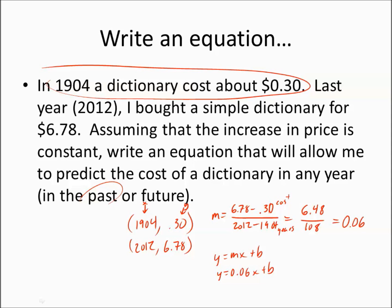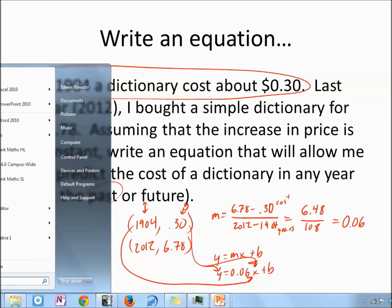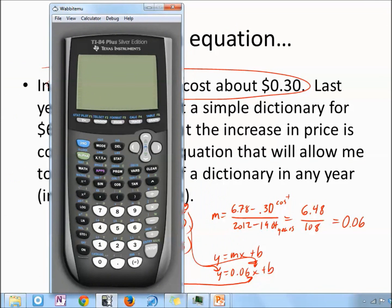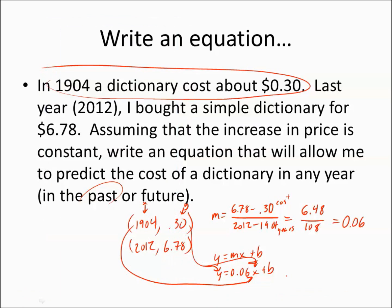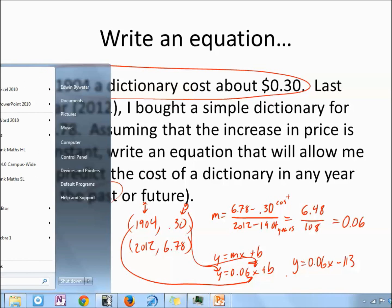And now, I need to find b. So, how do I get b? Well, the same way I've done it the last couple of times, which is to put in a point. And it really doesn't matter what point you put in. So, 0.30 goes in for y. And, 1904 goes in for x. And this time, I am actually going to pull up my calculator. So, I'm going to do 0.30 minus 1904 times 0.06. And that will give me -113.94. And I know that seems quite strange.